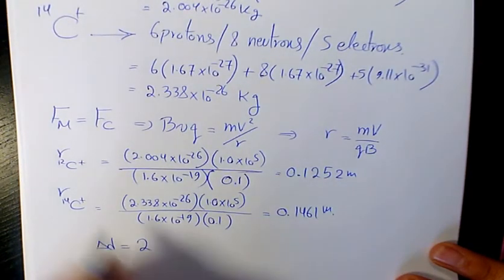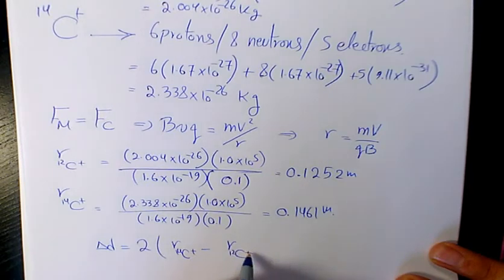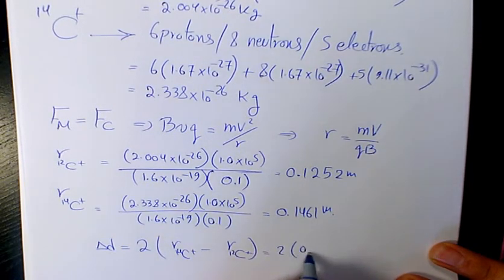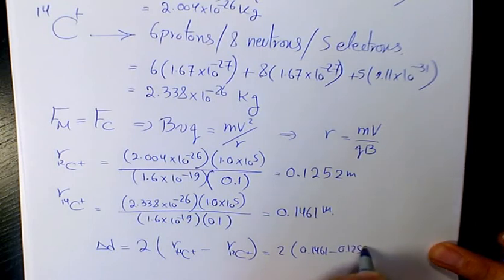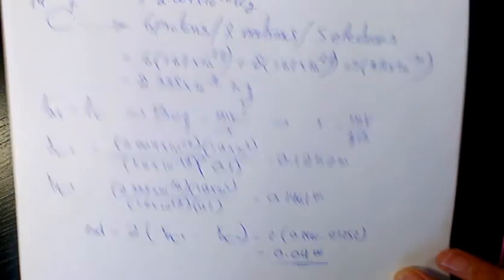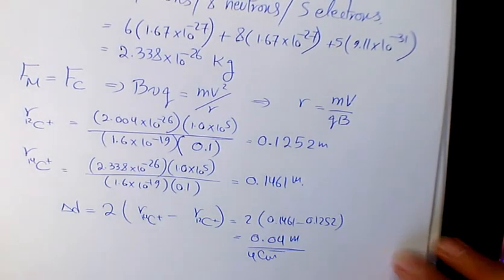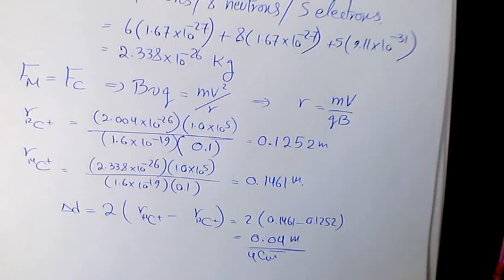The distance between the two is double the difference in radii: 2(0.1461 - 0.1252) = 0.04 m or 4 cm. The ion detector must move a distance equal to the difference in the diameters of the circular trajectories, which is 4 centimeters.